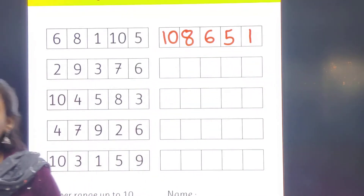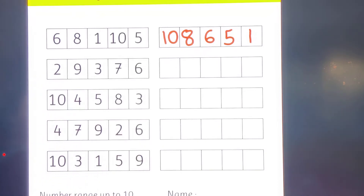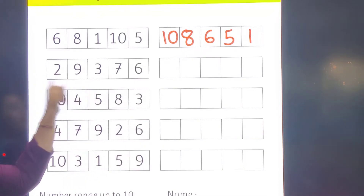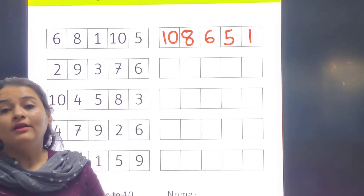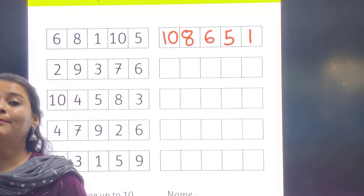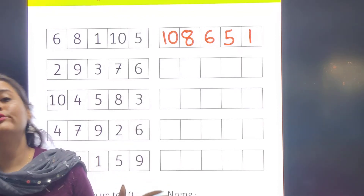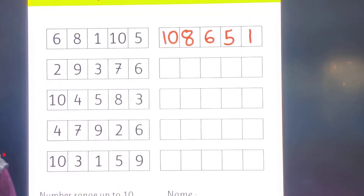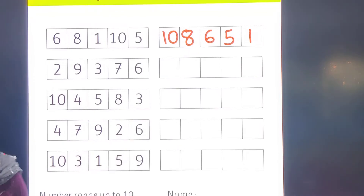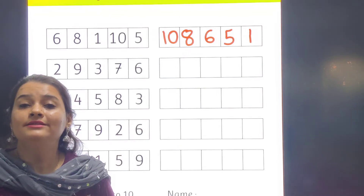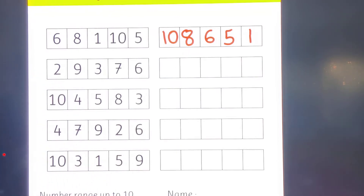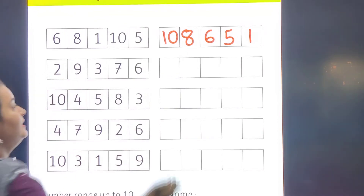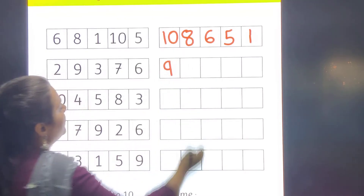Shall we do one more? Ready everyone? So here we have more numbers to arrange from big to smallest. Shall we do backward counting? So first 10, then 9 — is 9 here? Yes, 9 is here. So first I will write number 9.